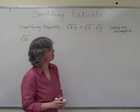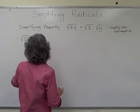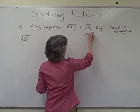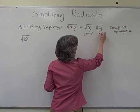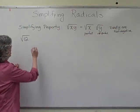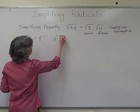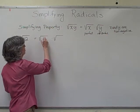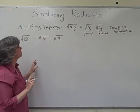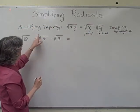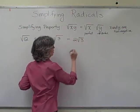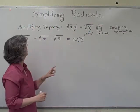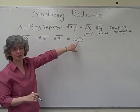We're still assuming x and y are non-negative. So we could start with the square root of 12, thinking about having our perfect pieces in one part and our non-perfect pieces in the second. 12 factored as 4 times 3 — 4 is a perfect square, 3 is not. The square root of 4 is 2, so we get 2 times the square root of 3. Radicals are considered more simplified when their perfect factors are pulled out.